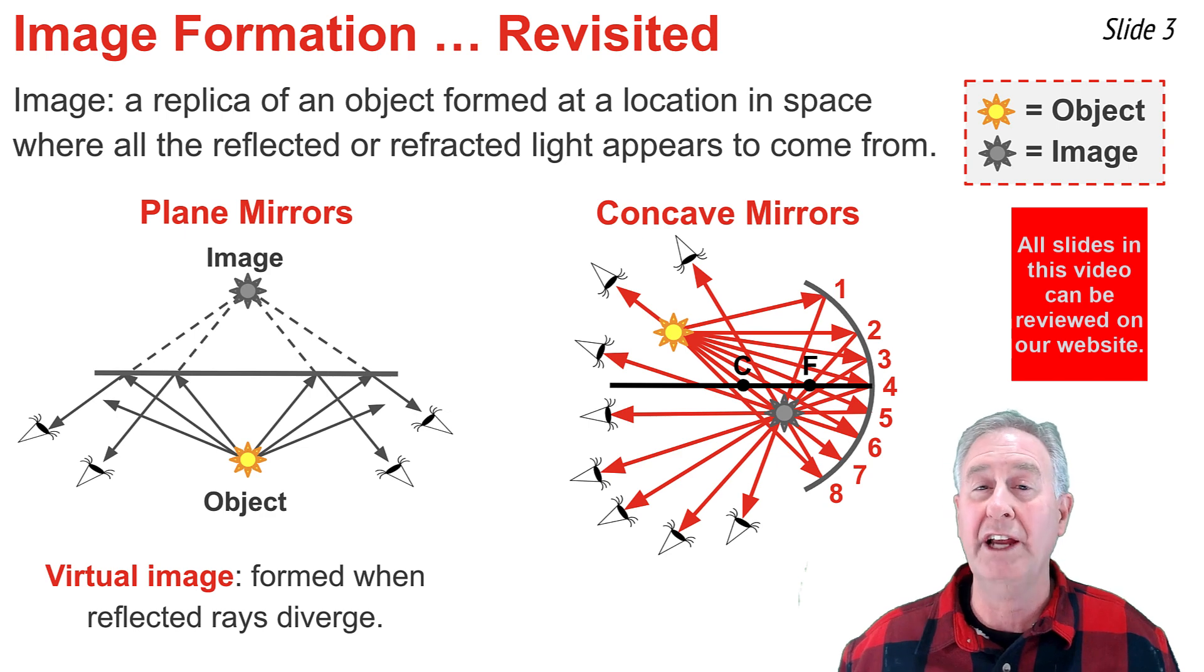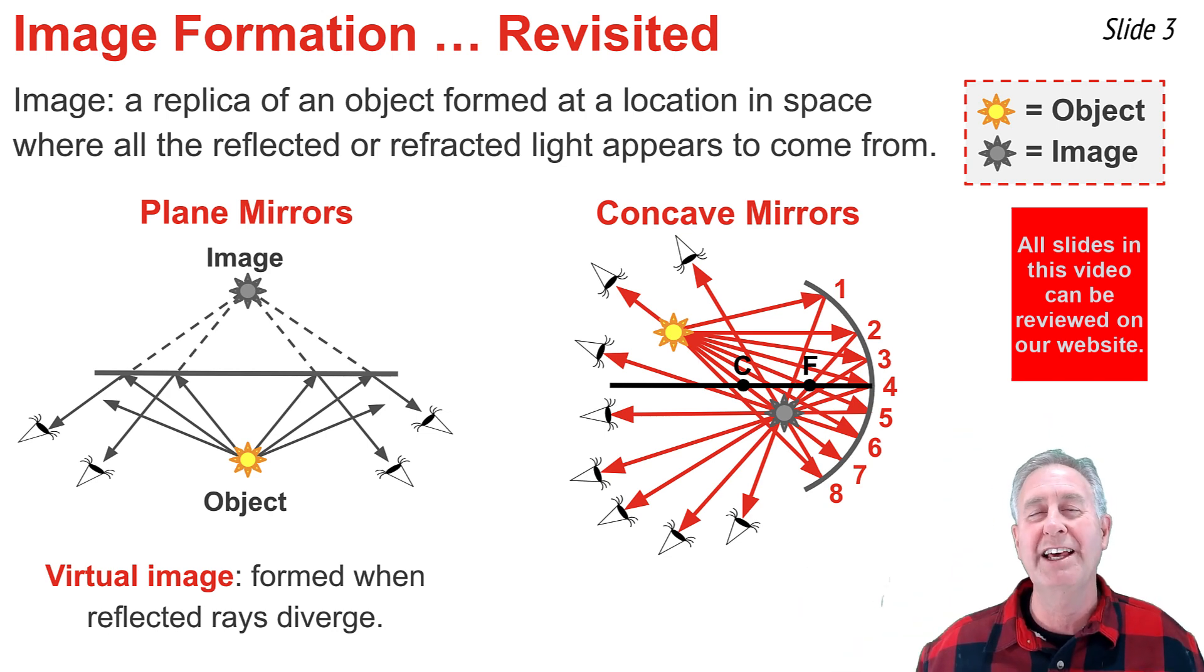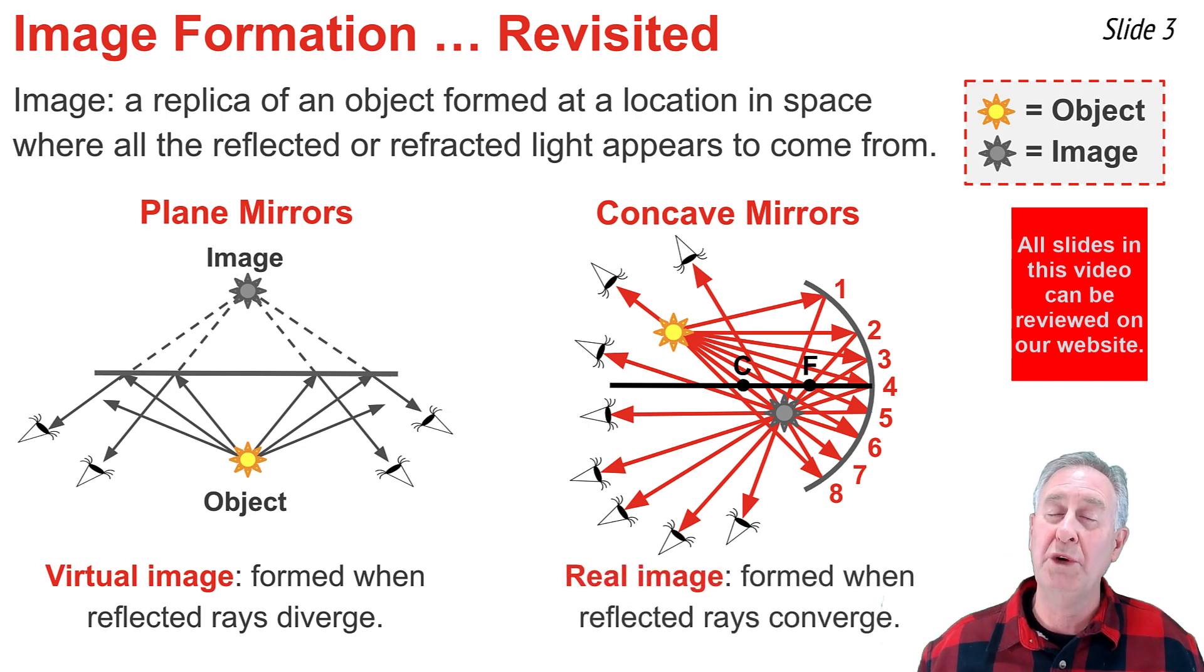And, from there, the light diverges to the observer's eye. So, when an observer sights along these lines, they see an image, a representation or replica of the object. This type of image is known as a real image because the reflected light rays converge upon reflection from the mirror.